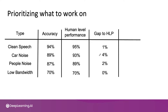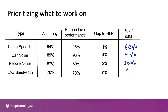Rather than deciding to work on car noise because the gap to HLP is biggest, one other useful factor to look at is what's the percentage of data with that tag. Let's say that 60 percent of your data is clean speech, 4 percent is data with car noise, 30 percent has people noise, and 6 percent is low bandwidth audio.